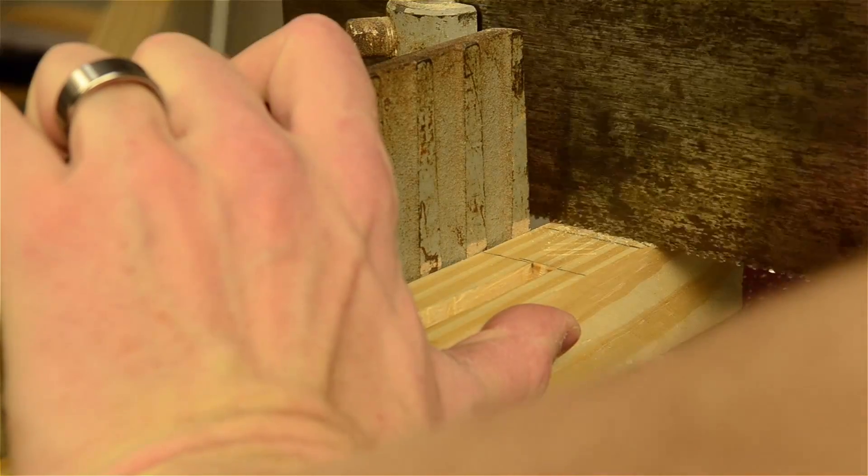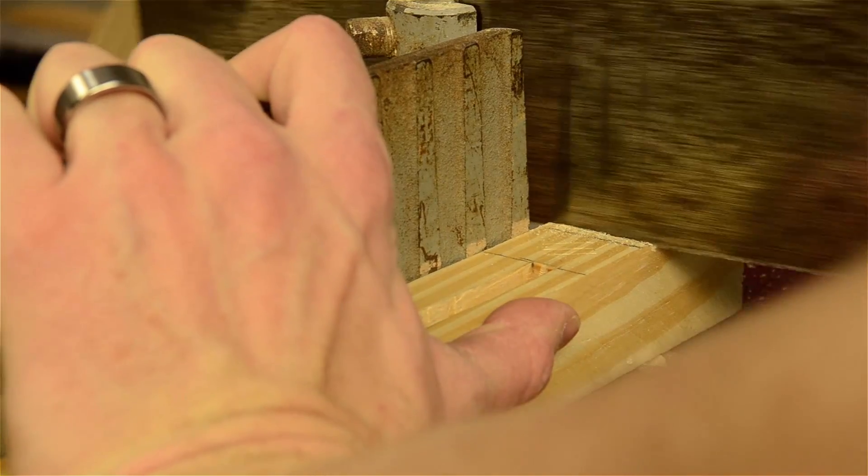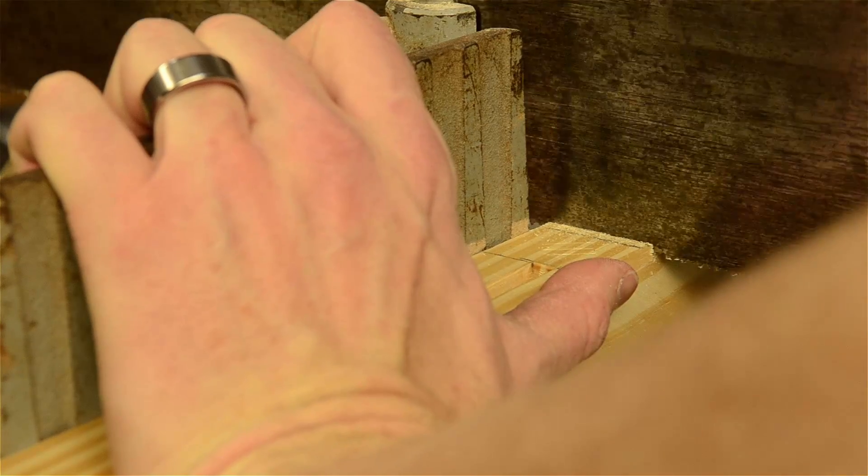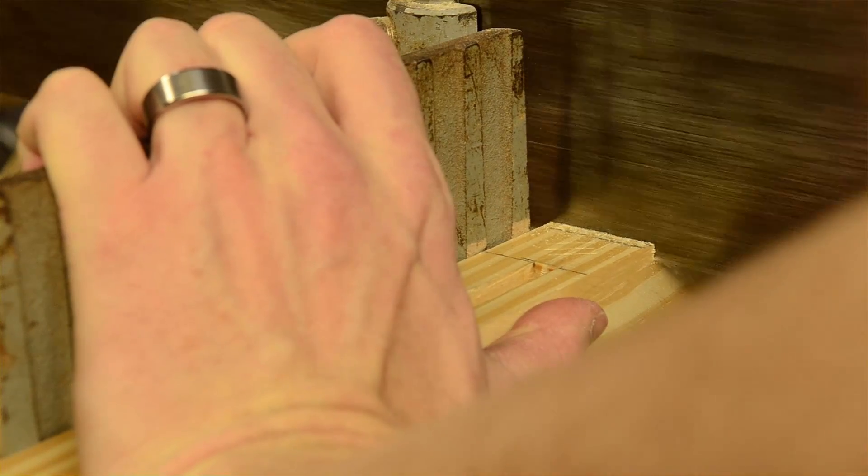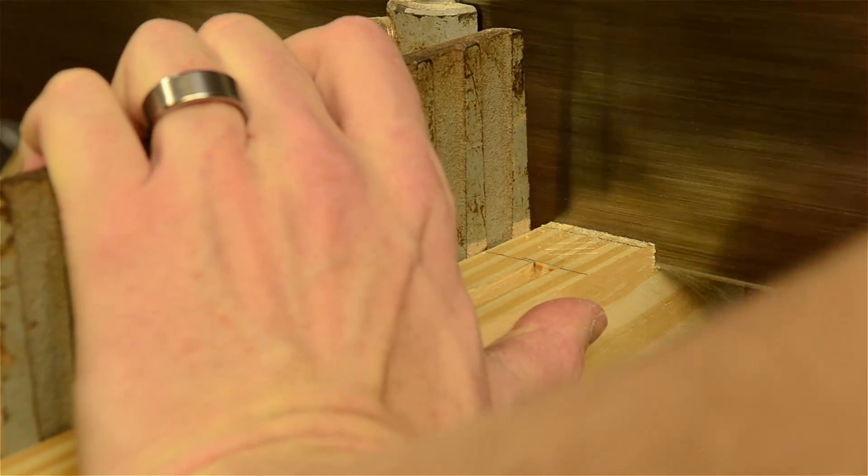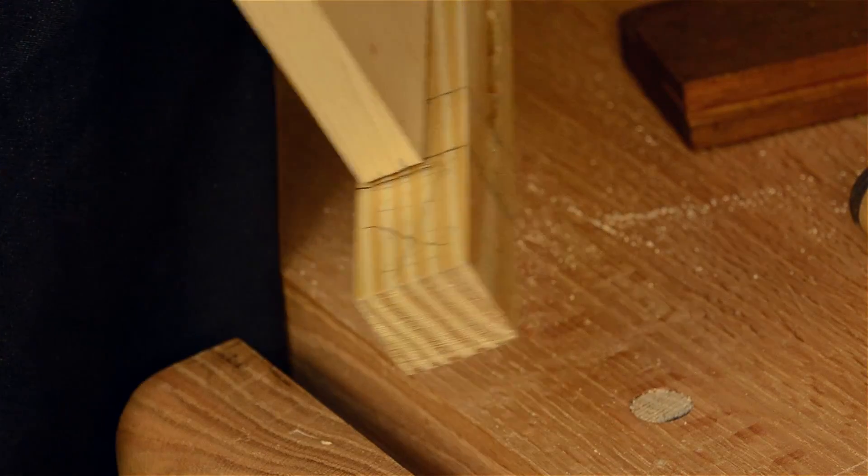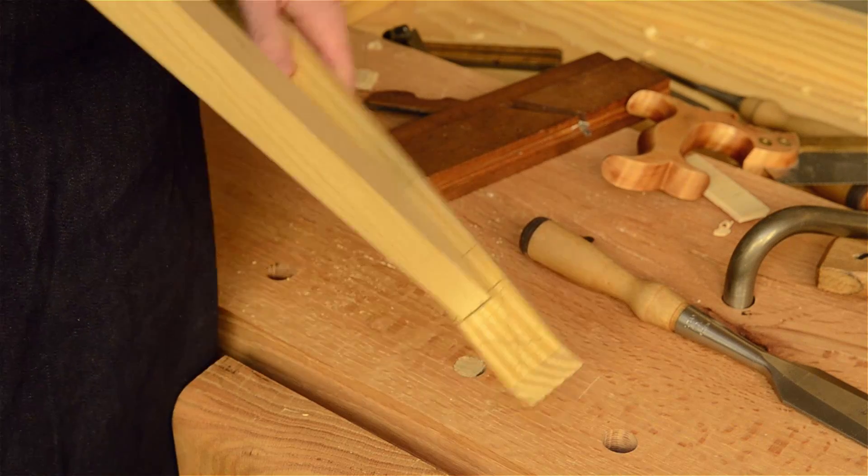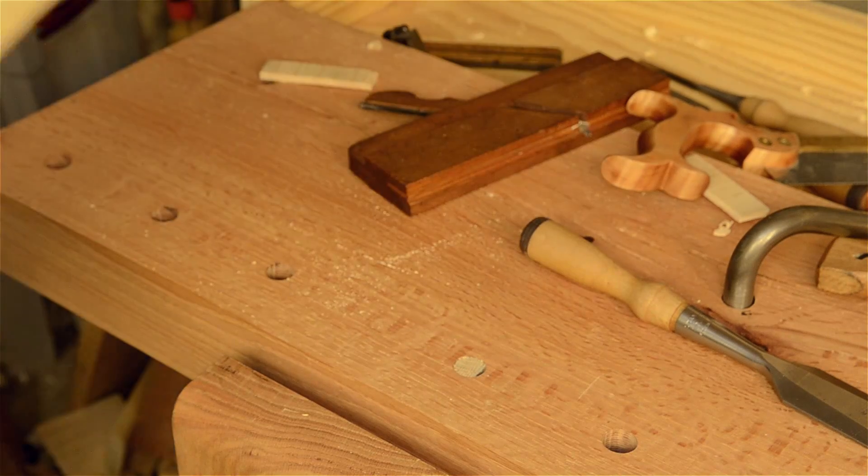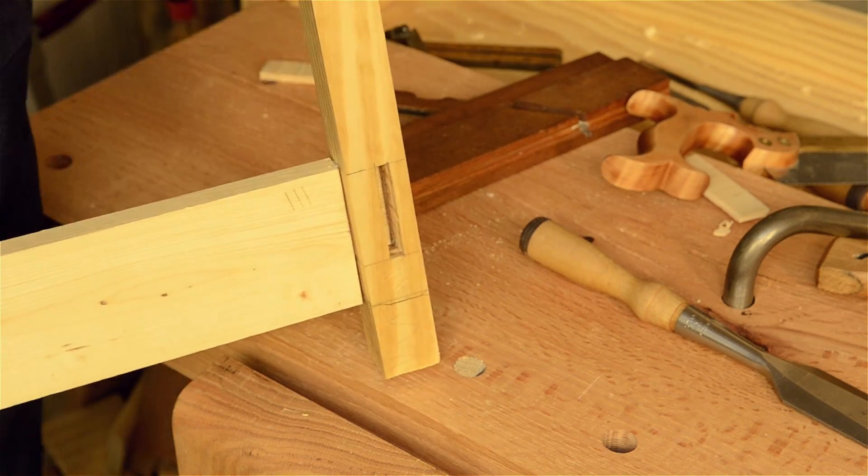So what I would do. This is my preference. Is I would go ahead and take this over to the miter box saw. And trim it off above that line. And then you will get rid of that part. But also while you are at the miter box saw. As I mentioned before.